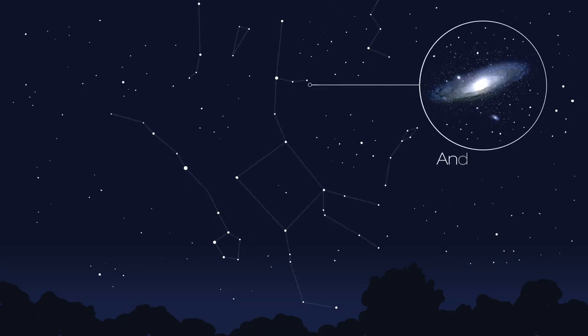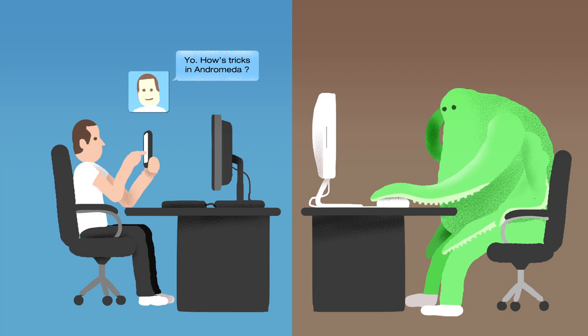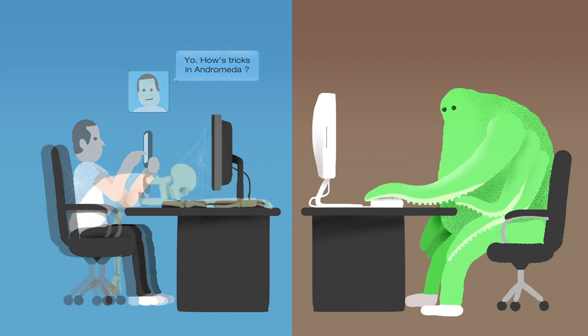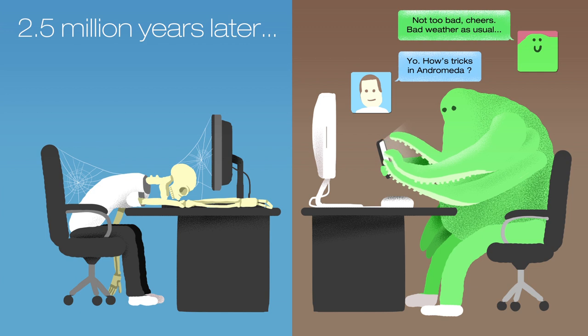The closest big galaxy to us is Andromeda. If we sent a text message out to aliens in Andromeda, it would take two and a half million years to reach them.